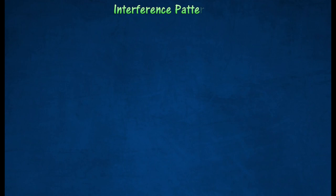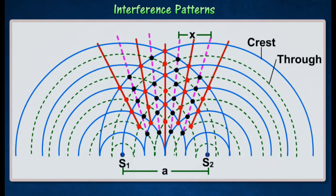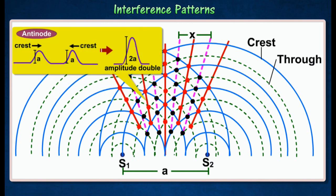In the ripple tank experiment for studying interference of waves, the spherical dippers can be used to produce coherent sources. Antinodal lines consisting of maximum crest and maximum troughs when constructive interference occurs. It's a line consisting entirely of antinodes.